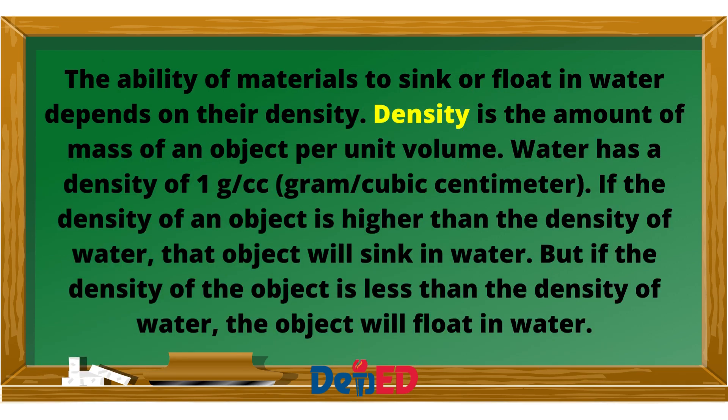The ability of materials to sink or float in water depends on their density. Density is the amount of mass of an object per unit volume. Water has a density of 1 gram per cubic centimeter. If the density of an object is higher than the density of water, that object will sink. But if the density of the object is less than the density of water, the object will float.